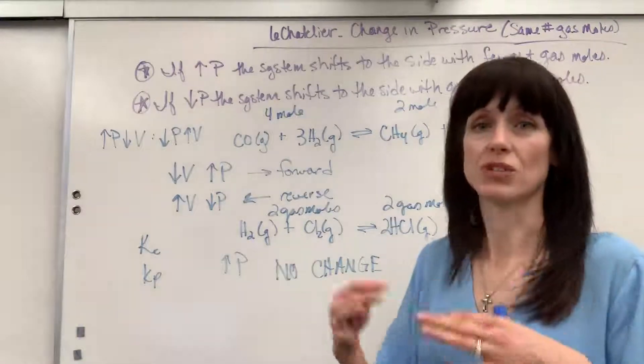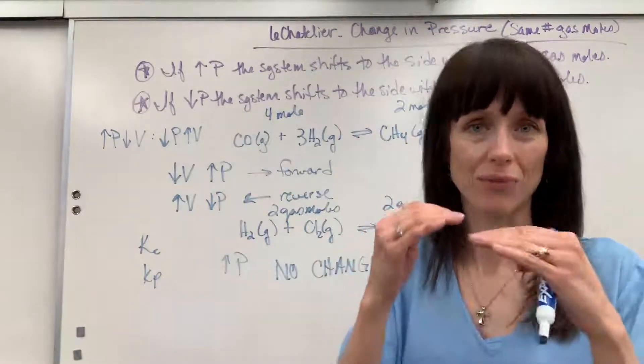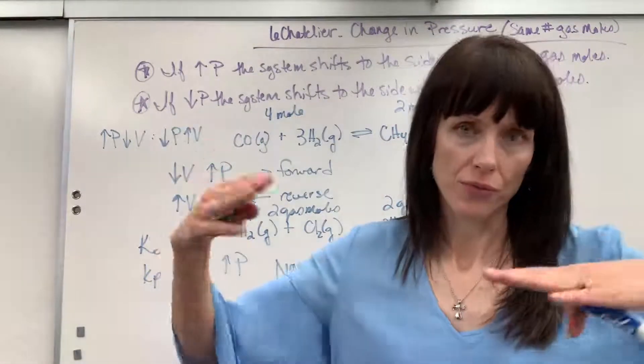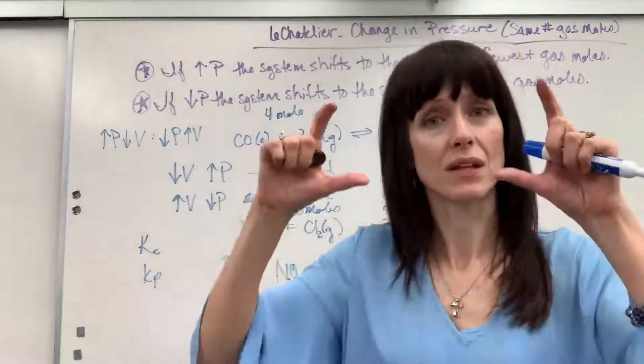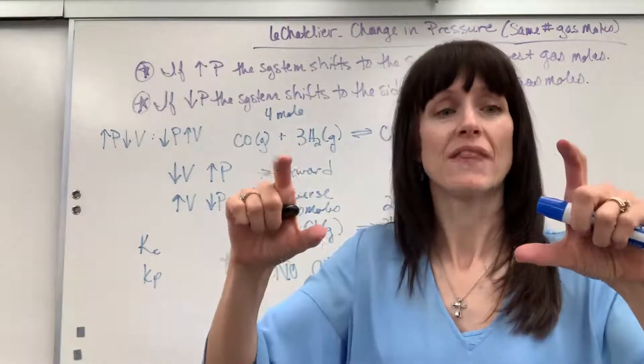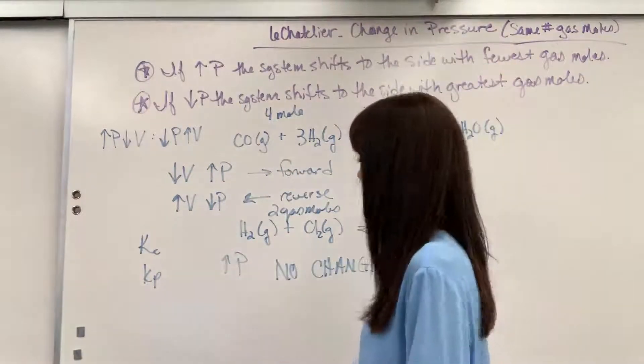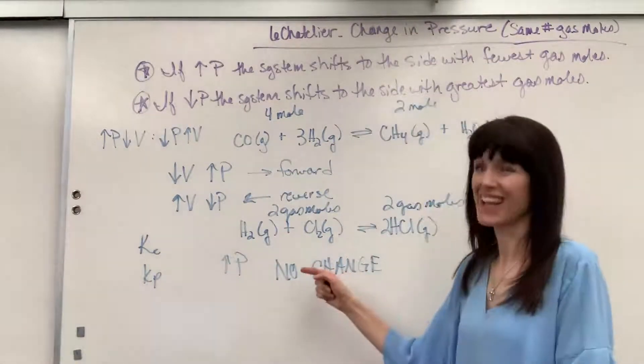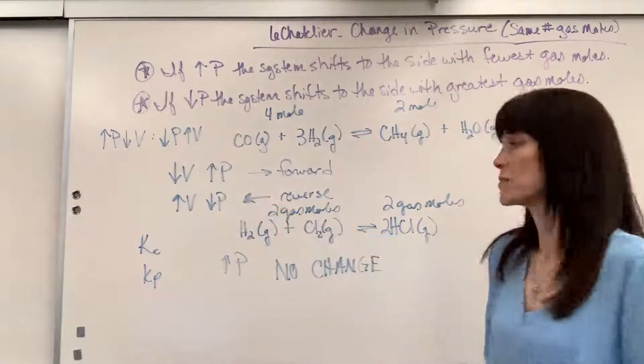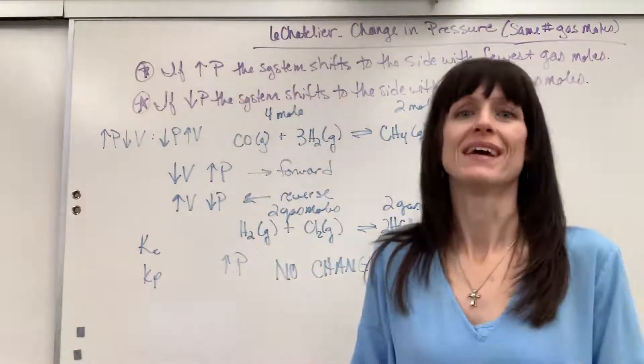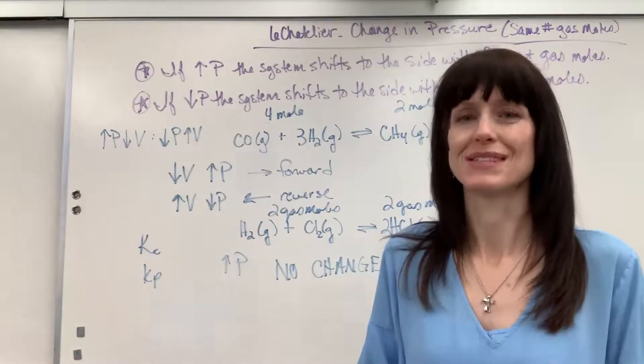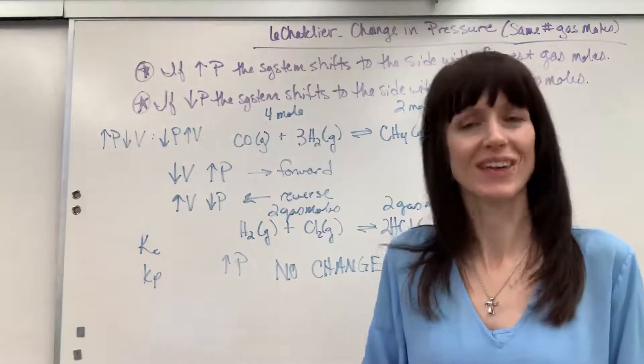What happens is the system will shift to go back into that ratio that you get equal forward and reverse rates so that the concentrations, that constant concentration, that ratio, will be the same value. Okay, so remember this little trick. If you have equal number of gas moles, change pressure and volume, there's no change, no stress to the system. It stays in equilibrium. Okay, nice. Thanks.